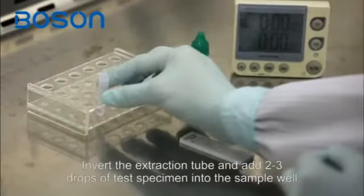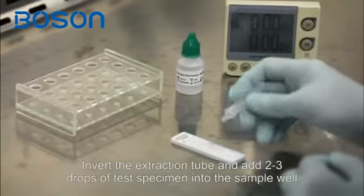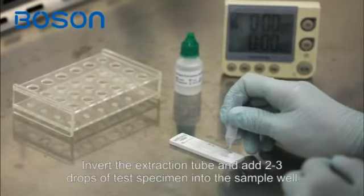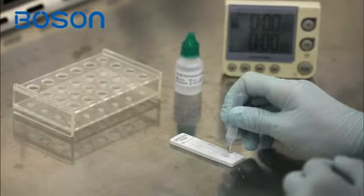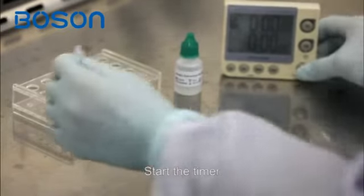Invert the extraction tube and add 2-3 drops of test specimen into the sample well. Start the timer.